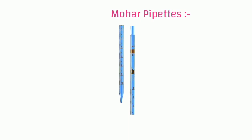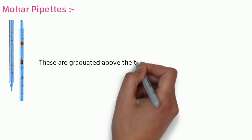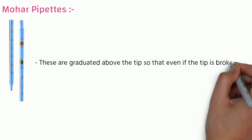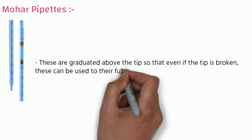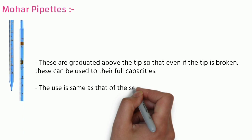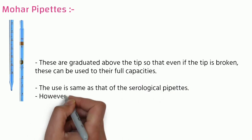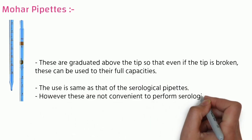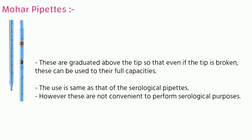Mohr's pipettes — you can see this in the picture. These are graduated above the tip, so that even if the tip is broken, they can be used to their full capacity. The use is the same as serological pipettes, however they are not convenient for serological pipette purposes. In the next lecture we will cover plasma samples and what a colorimeter is. Thank you.